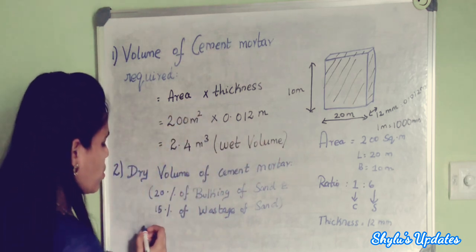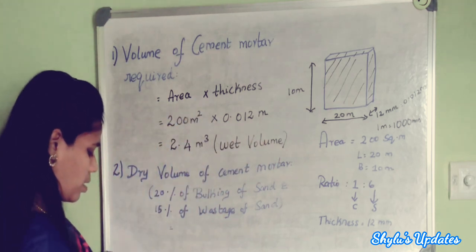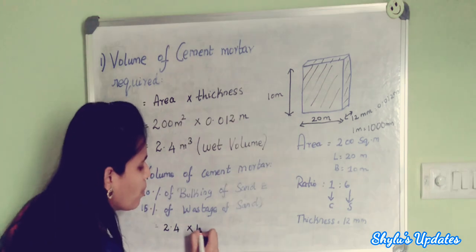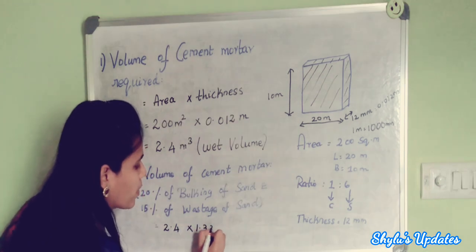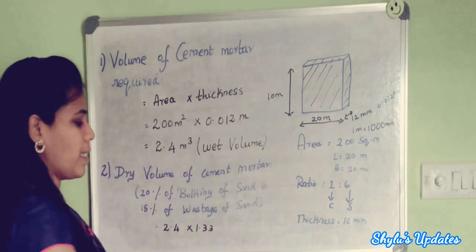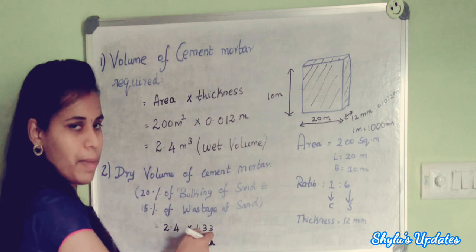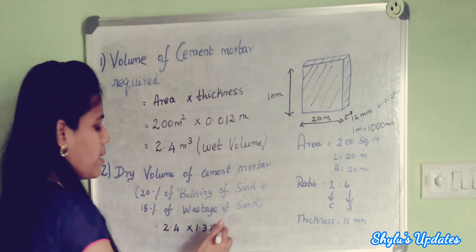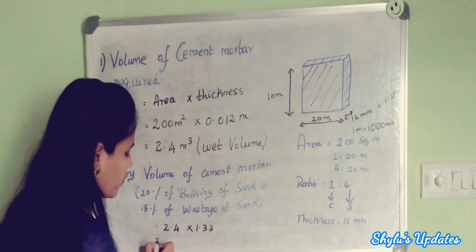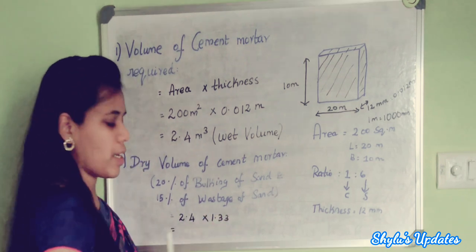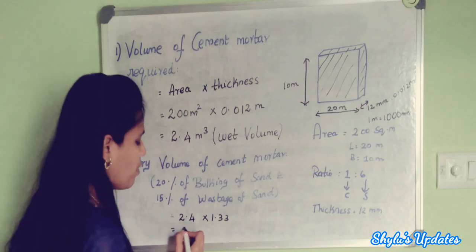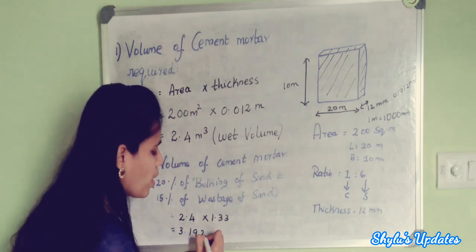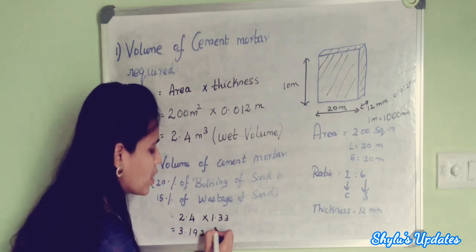So dry volume equals wet volume into 1.33. That gives us 2.4 into 1.33, which equals 3.192 cubic meters.